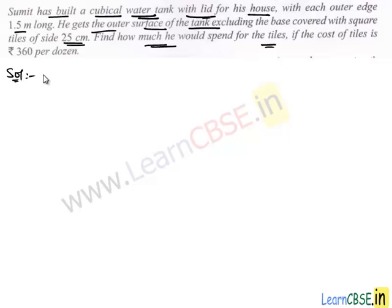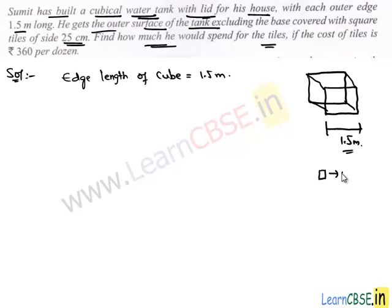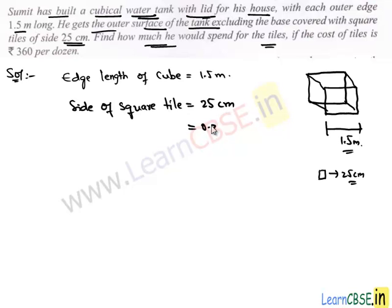So let's work out the problem. We are given a cubical tank whose edge is 1.5 meters long. Sumit plans to cover the entire tank excluding the base on its outer surface with square tiles, and the dimension of the square tiles is 25 centimeters. So the side of the square tile is 25 centimeters, that is 0.25 meters, since we are working with dimensions in meters.